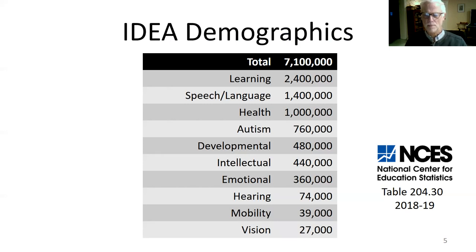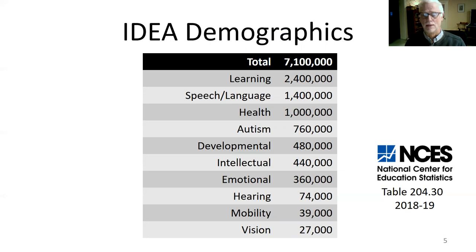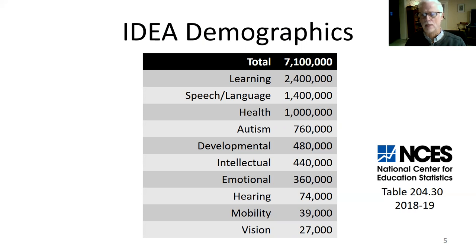At the very bottom are some smaller groups: those that are deaf or hard of hearing, those that have mobility issues and perhaps can't use a mouse and keyboard, and those that have vision disabilities who may use a screen reader or some other access device. Those are very small groups, but they should be included as well. They are the ones that principally use a lot of technology, while the larger groups above are more about pedagogy, universal design for learning, and things like that.